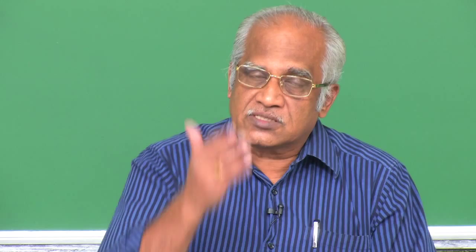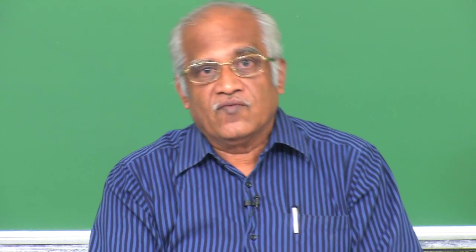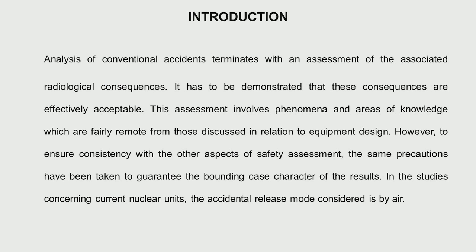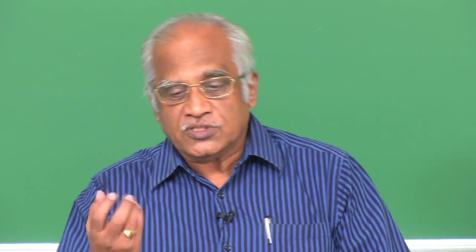We saw those limits in one of my earlier lectures. We have a limit for a single year for an occupational worker, and averaged over five years — that also we saw. Then for the common public, we had a limit of about 1 millisievert. We need to limit the amount of activity to which a member of the public would be exposed outside the exclusion zone, so it is essential that we assess what could be the release of activity and how much could reach.